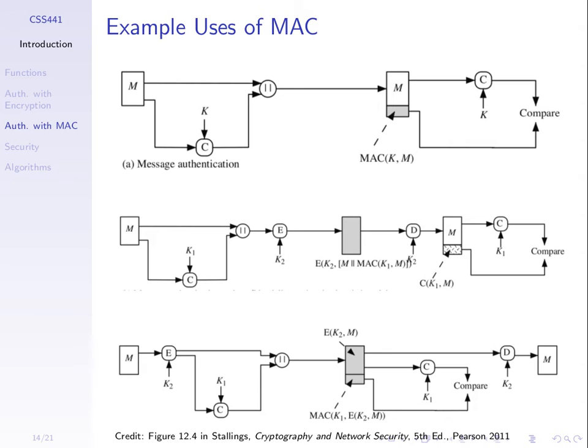One approach for authentication is to use message authentication codes. Even without MACs, if we just use symmetric key encryption, we can have authentication if the receiver can recognize the correct message. But there are problems with that, so in practice it's better to add some extra information, like a MAC, so that for sure the receiver can check if the message is modified or not.